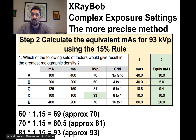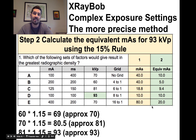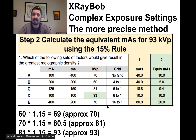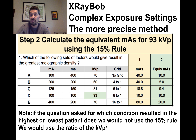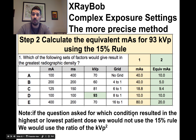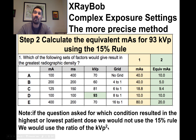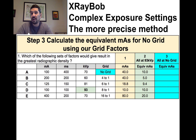The more precise way to do this problem starts the same — calculate the mAs — but then we pick a reference kVp value. Let's pick 93 and scale the mAs to an equivalent value that would produce the same density. We use the 15% rule: 60 kVp, plus a 15% step gets to 70; 70 plus 15% gets to 81; 81 plus 15% gets to 93.